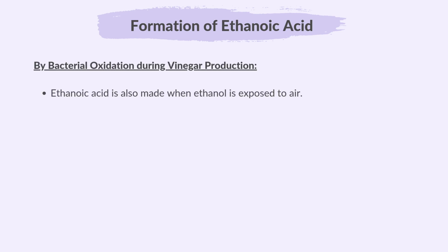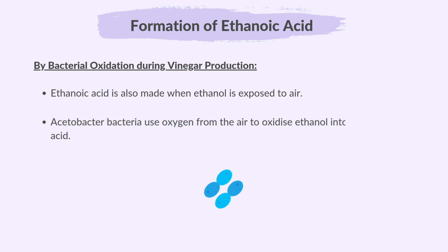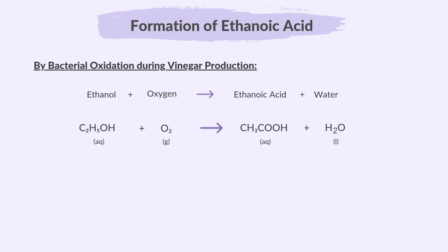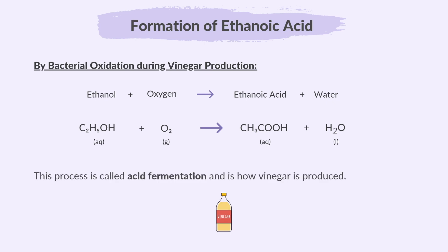Ethanoic acid is also made when ethanol is exposed to air. Acetobacter bacteria use oxygen from the air to oxidize ethanol into ethanoic acid. The reaction is: ethanol plus oxygen gives ethanoic acid and water. This process is called acid fermentation and is how vinegar is produced.